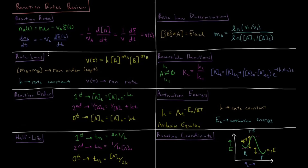Rate laws form an expression for what the rate is as a function of the concentration of various reactants. So V(t) is equal to some rate constant K — which, as its name implies, is a constant — times the concentration or molarity of a given reactant raised to some power called its order, for all reactants which are present.